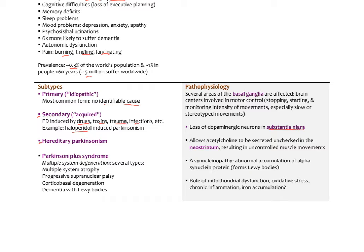Parkinson's plus syndrome involves multiple system degeneration, including conditions like multiple system atrophy, progressive supranuclear palsy, cortical basal degeneration, and dementia with Lewy bodies — all representing Parkinson's combined with other neurodegenerative diseases. A more advanced neurological evaluation would be needed to distinguish these.